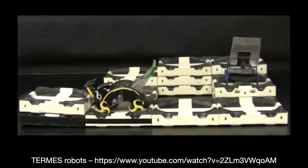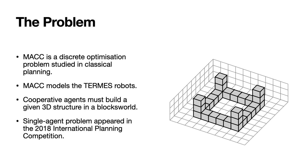Our MAC problem is based on these Termes robots developed at Harvard. The MAC is a discrete optimization problem studied in classical planning, so it hasn't been studied in terms of discrete optimization technologies such as CP and IP before. In the MAC problem there is a set of cooperative agents which must build a 3D structure within a blocks world. In this blocks world there are grey blocks and robots use these grey blocks to build the 3D structure. We can have almost any kind of structure but we cannot have those that look like caves, because caves are hollow underneath and the pillars need blocks underneath to support them. The single agent version of this problem appeared in the 2018 International Planning Competition.